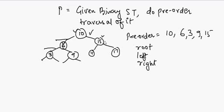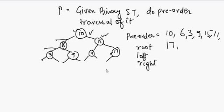Node 15 is traversed. It has a left child, so we traverse 11. Node 11 has no left subtree and no right subtree, so we go back to 15 and traverse its right subtree, which is 17. Node 17 has no left and no right subtree, so we finish our traversal here.